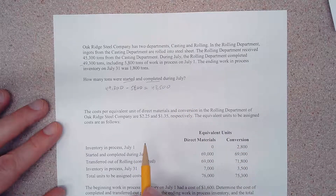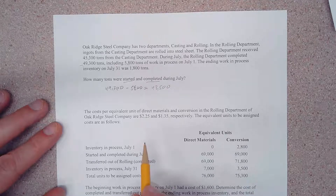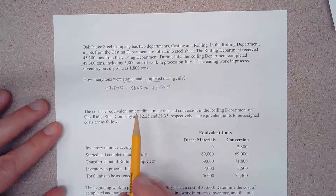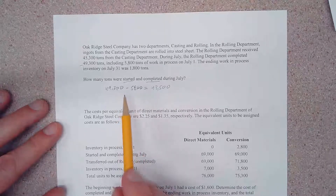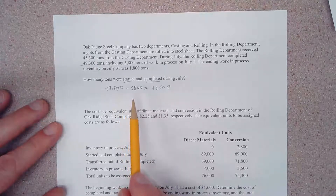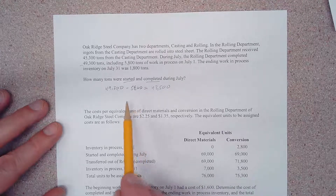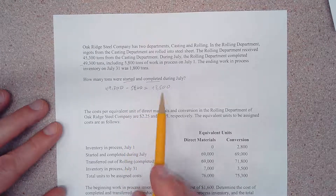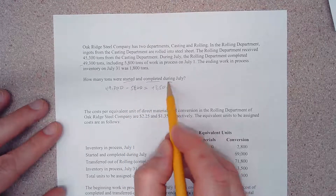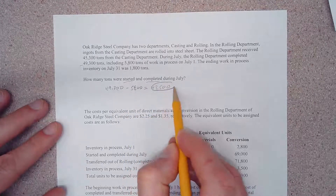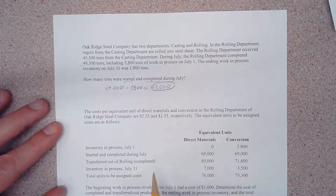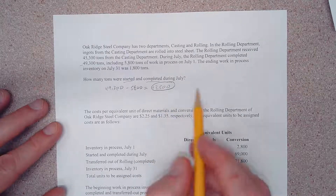You might ask whether the other numbers are just irrelevant. Well, they might be — we didn't need them to get our answer. 43,500 is our answer using method one, but we could have also used a second approach.